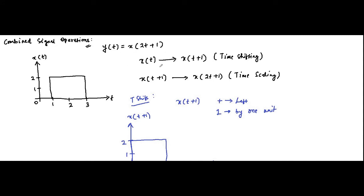To perform this combined signal operation we did time shifting then time scaling. Whenever you get confused with combined signal operation expressions, pick one end and move from that end to the other — here from right side to left side. As you move from right to left, pick the individual signal operations which appear. Moving right to left you first see t+1, so you perform x(t) to x(t+1) first; then you see 2t, meaning time scaling, so you perform x(t+1) to x(2t+1) second.